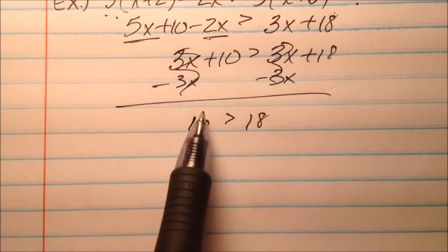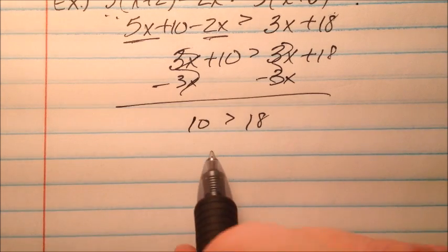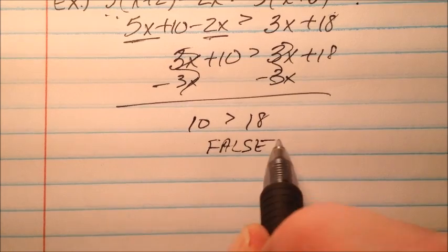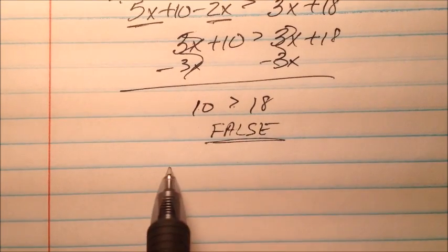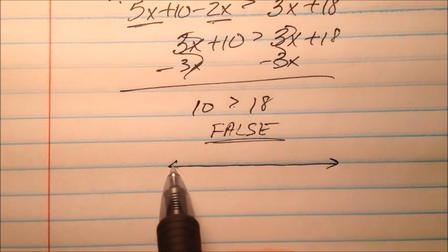Well, all my variables have canceled out, and I'm left in this case with a false statement. No, 10 is not bigger than 18. So it's a false statement. All my variables have canceled, right? So it's an inequality, so I need to graph something.